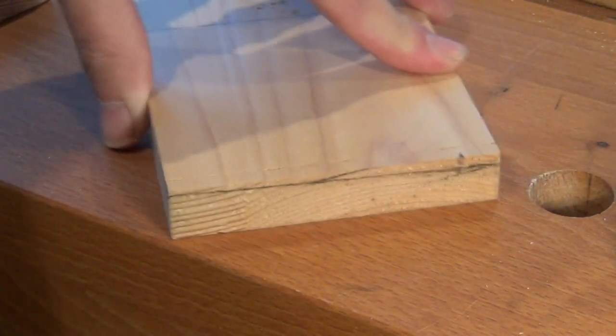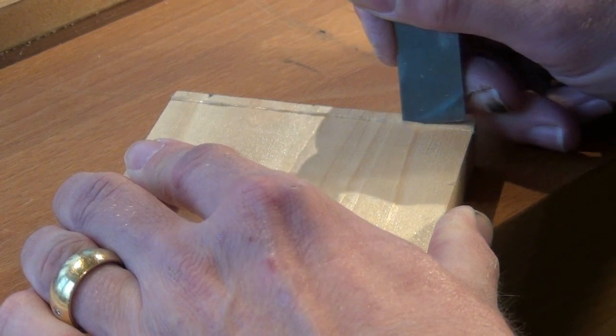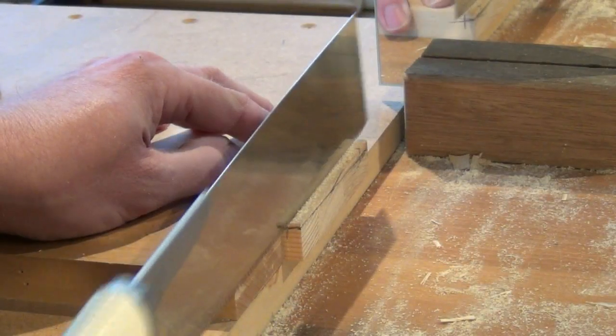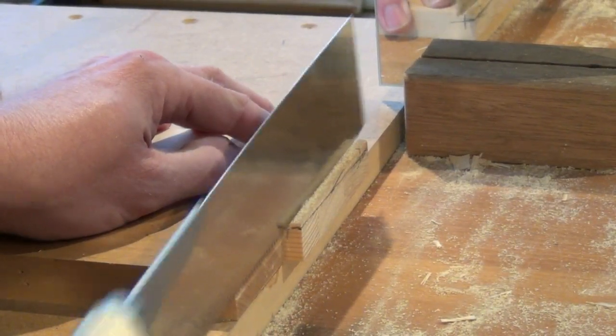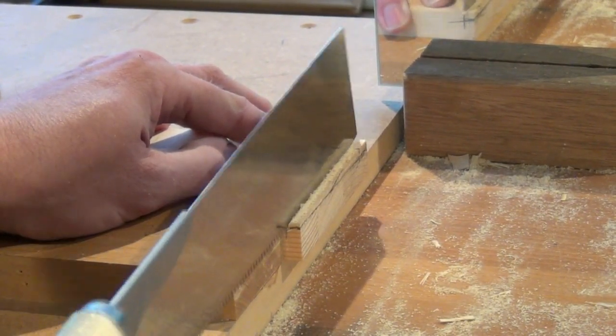Then deepen it and create a V cut with a chisel. Saw in the shoulder line. And I'm using a mirror here so I can see how deep I need to go on the far side.